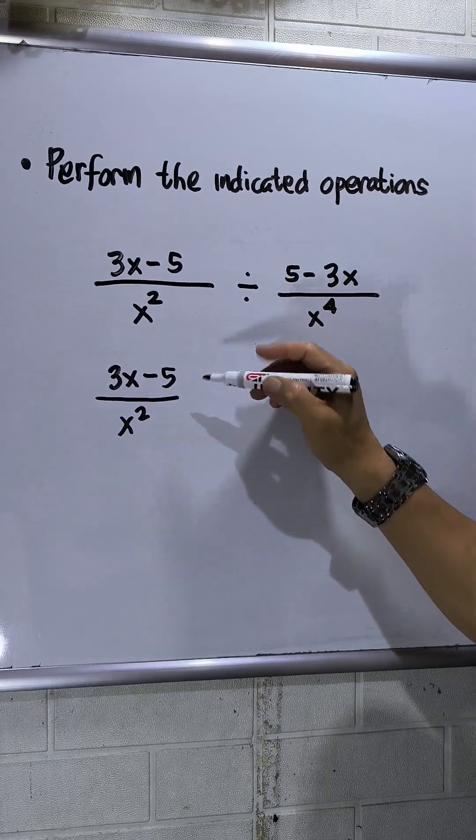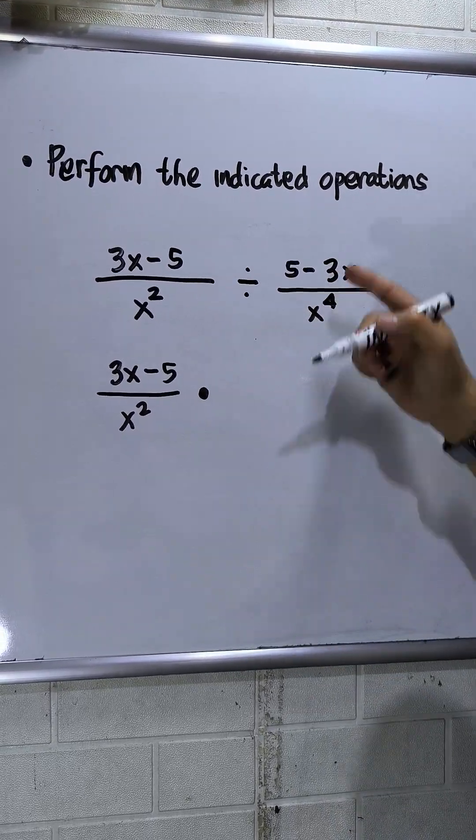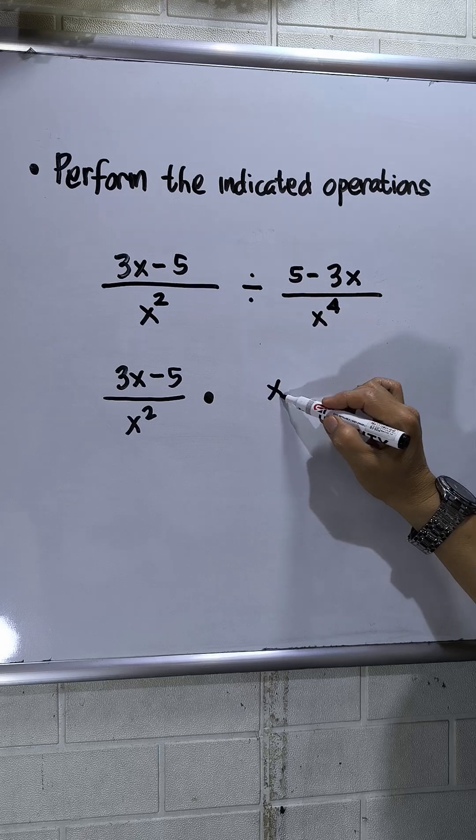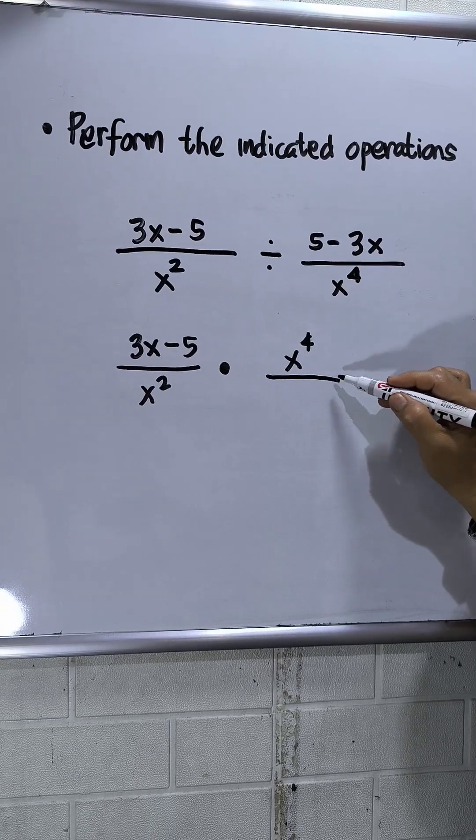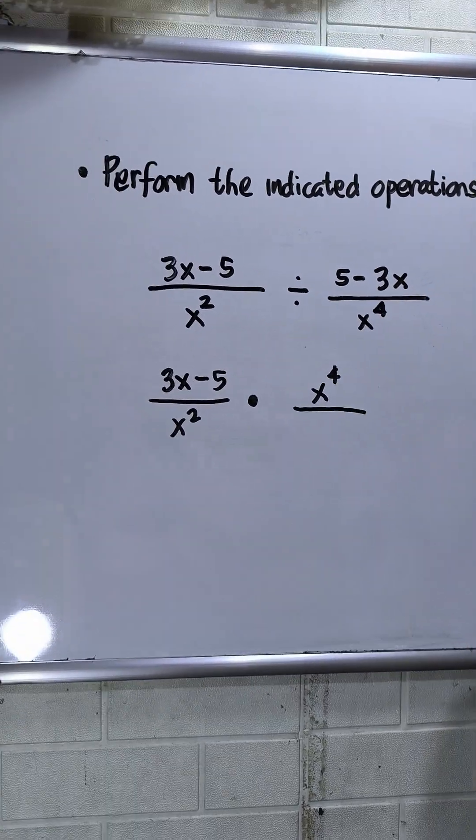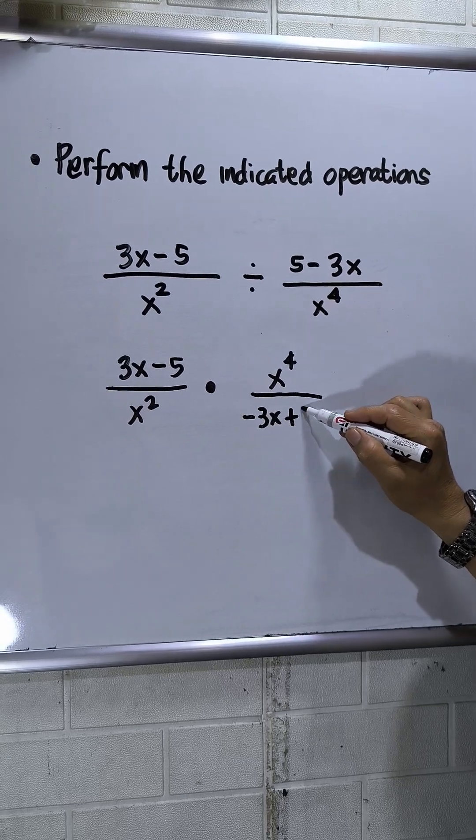Then I will change the operation to multiplication, then upside down of the fraction. So this will be x to the 4th, then this will be, and I will arrange this one. So it should be negative 3x plus 5.